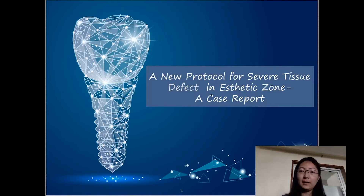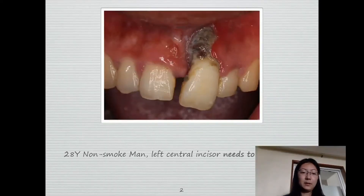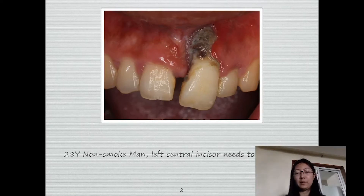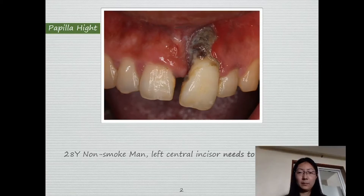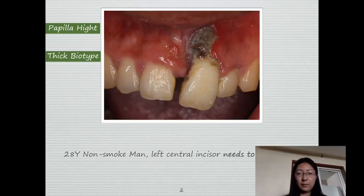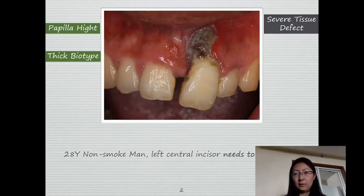Today I will share a case about severe tissue defect in the esthetic zone. This patient is 28 years old, non-smoker. His left central incisor needs to be extracted due to trauma history and severe periodontal disease. From this picture we can see the papilla height is somehow good compared to the adjacent tooth. He has a thick biotype but due to infection has severe tissue defect.